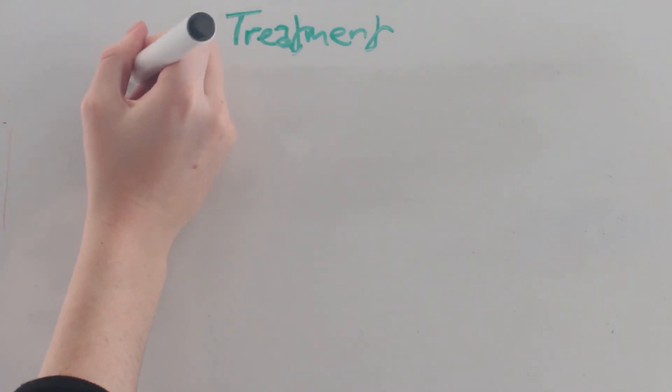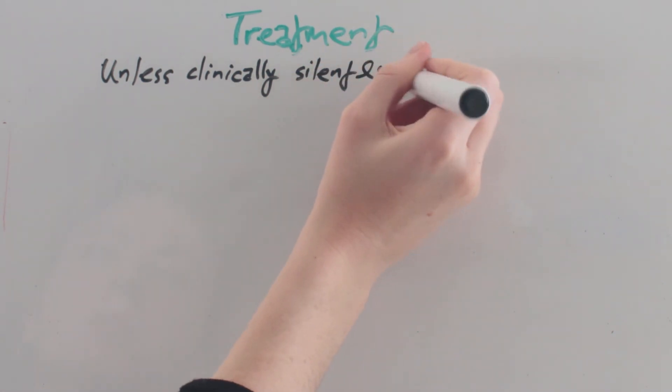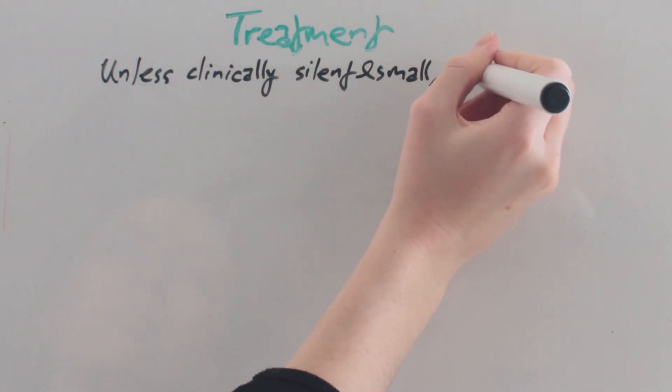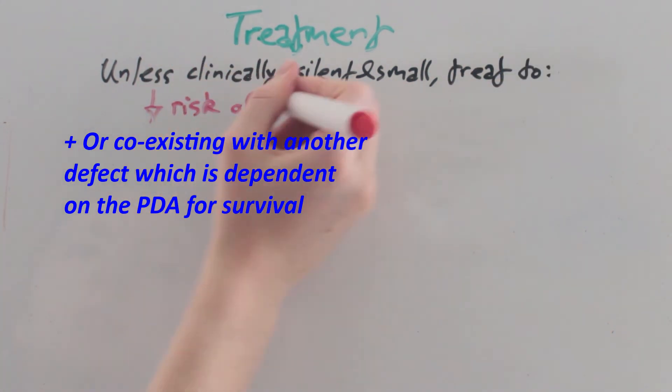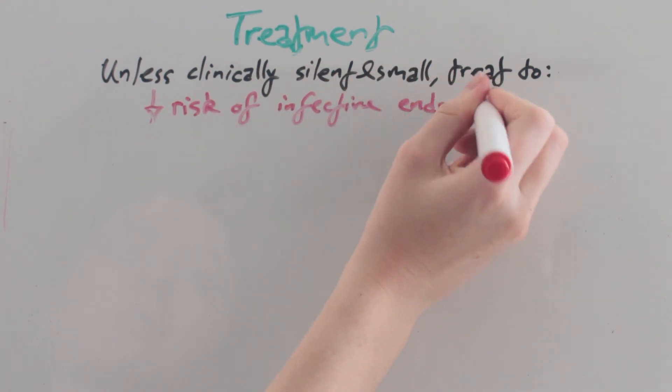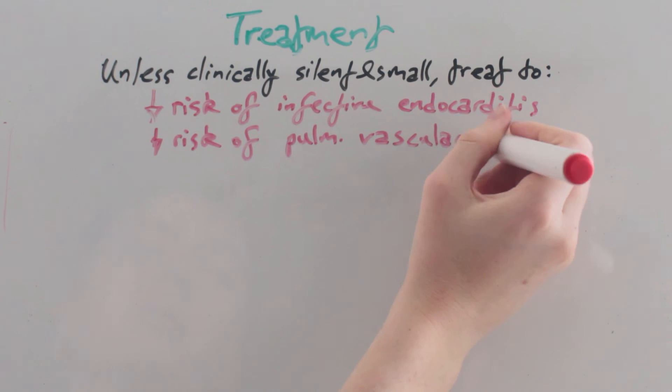Finally, let's look at treatment. Unless the lesion is clinically silent and small, or coexists with another defect which is dependent on the PDA for survival, we can treat with the aim to reduce the risk of infective endocarditis and reduce the risk of pulmonary vascular disease, which can include Eisenmenger's syndrome.